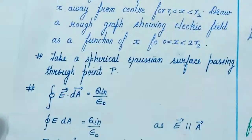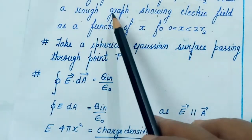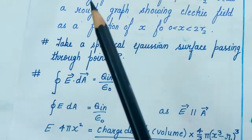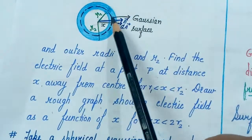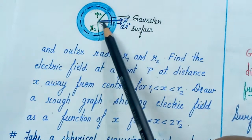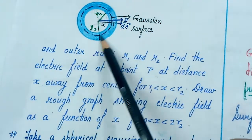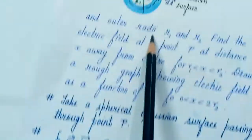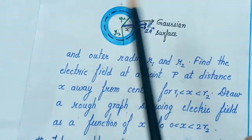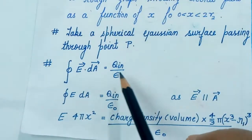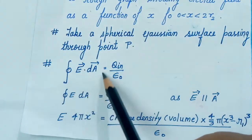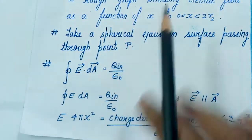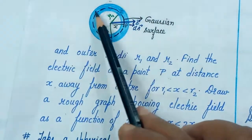To find E inside the material, we draw a spherical Gaussian surface of radius x centered at the center, where R1 < x < R2. We write Gauss's Law: net flux through the closed Gaussian surface equals charge enclosed divided by ε₀. Since the charge distribution is spherically symmetric, E is the same at every point on the Gaussian surface, and E and dA are parallel (radially outward). So the left side becomes E × 4πx².